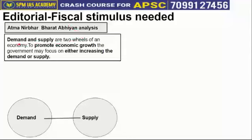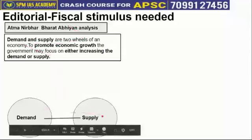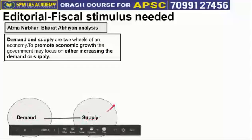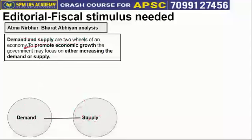Let's understand this point in detail by analyzing the Atmanirbhar Bharat Abhiyan according to Abhijit Banerjee. You briefly know about economics — the two main components of the economy are demand and supply. Demand means we as consumers consuming goods and services; supply means what producers produce. These are the two wheels of the economy and they move together in sync.